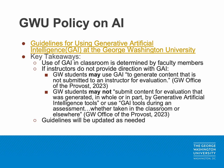The Office of the Provost recently published guidelines for generative artificial intelligence at the George Washington University. The guidelines are linked in the slides and are worth reading for a full understanding. Here are three key takeaways. Instructors are allowed and encouraged to set rules on the use of AI in their courses, and these rules should be clearly articulated to students in writing. In the event that an instructor does not provide direction, students are permitted to use AI to generate content that is not submitted to an instructor for evaluation. Students may not submit content for evaluation that was generated in whole or in part by AI tools, or use these tools during an assessment. These guidelines will also regularly be updated, and students should familiarize themselves with them.